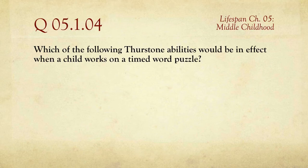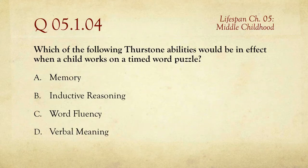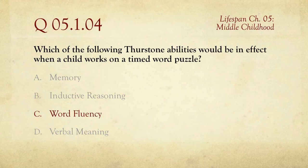Question number four: which of the following Thurstone abilities would be in effect when a child works on a timed word puzzle? It helps to know that Thurstone was an early intelligence test developer. The choices are memory, inductive reasoning, word fluency, or verbal meaning. The answer is word fluency — you take a word puzzle, it's timed, and you see how well you can do.